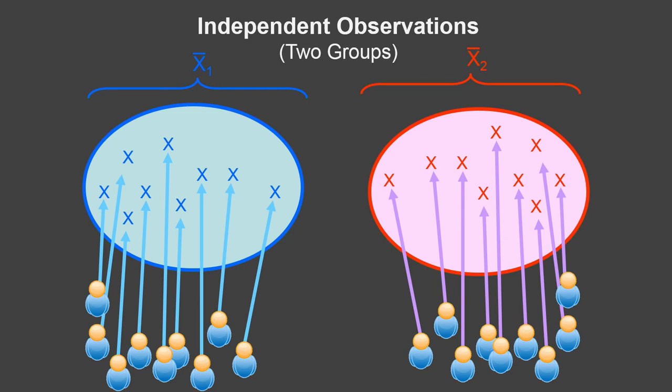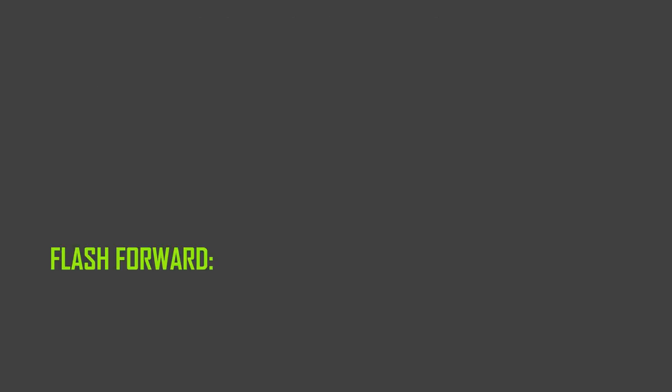You have one group, which is easy. Actually it can get more complicated, but it's easy for now. Or you have one group measured twice on the same or very similar variables. Or you have two groups measured once. The two groups measured once is called independent sampling. Independent samples.